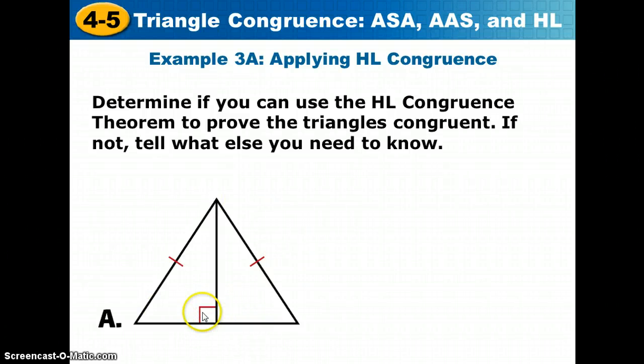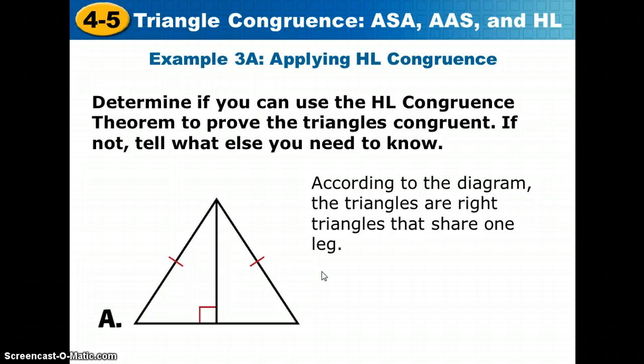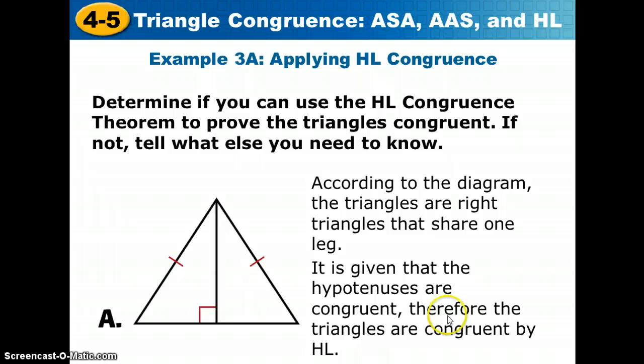Well, let's look here. We have a right angle here. That means both of these triangles are right triangles. We have the outer sides here that are congruent. Those outer sides are the hypotenii of each triangle. Hypotenii is the plural of hypotenuse. And they share this vertical leg. So we could say that the legs are congruent by the reflexive property. The triangles are right triangles, share one leg. It's given the hypotenuses are congruent. Therefore, the triangles are congruent by HL.